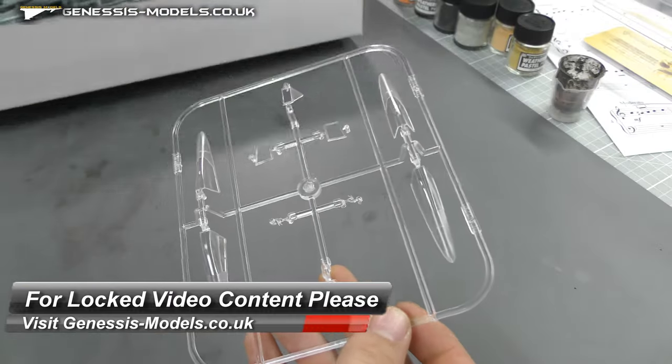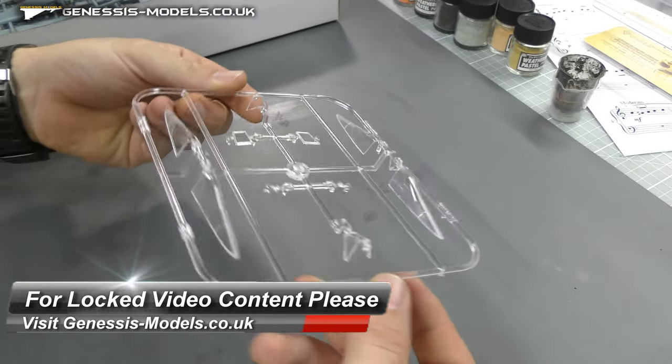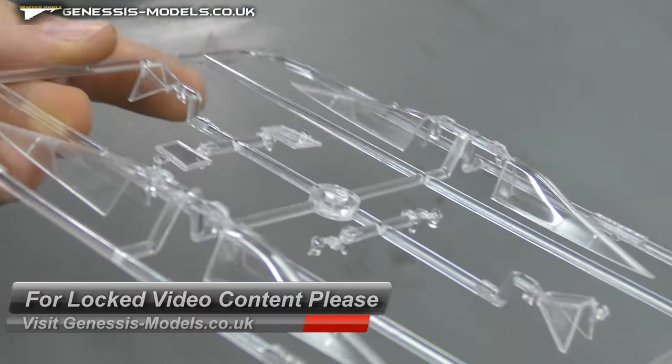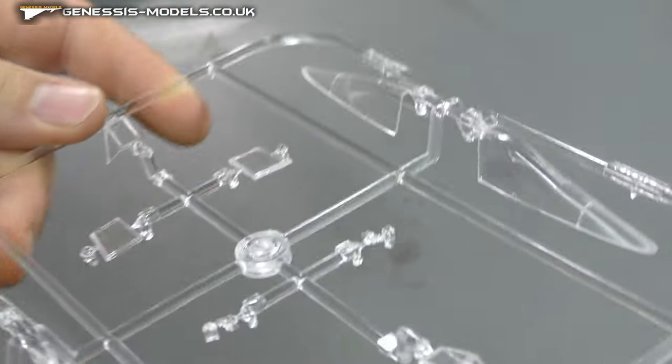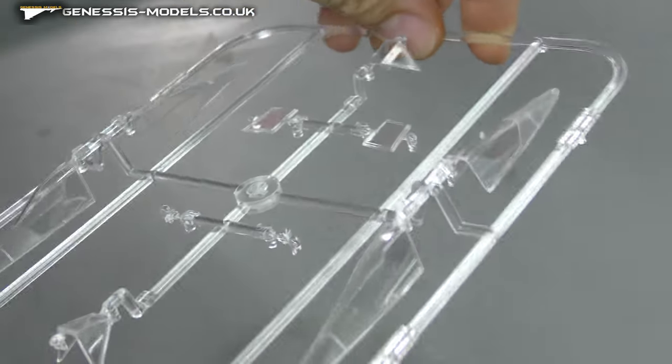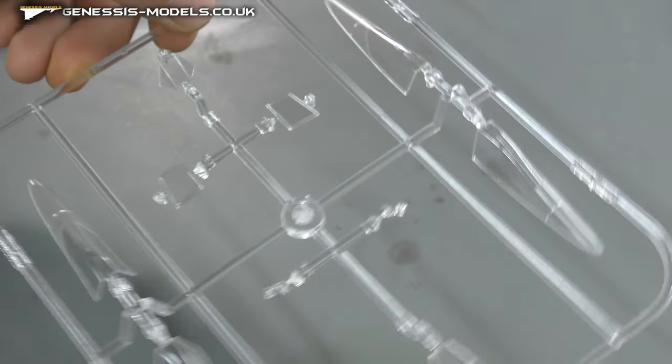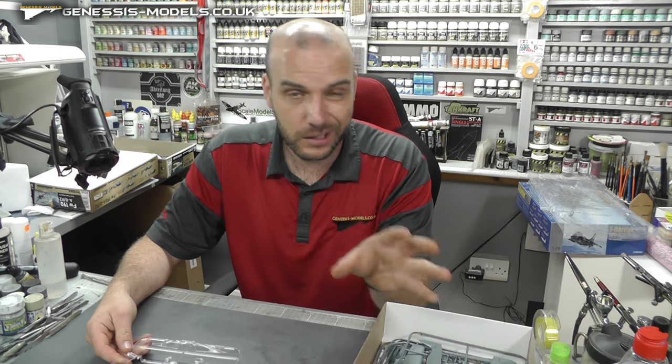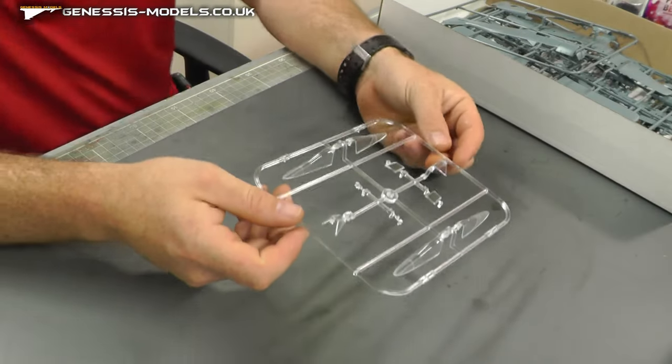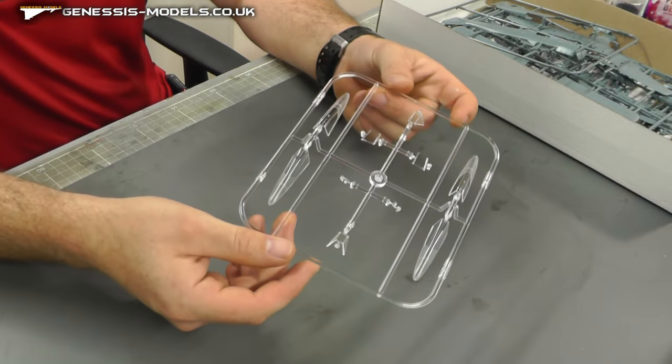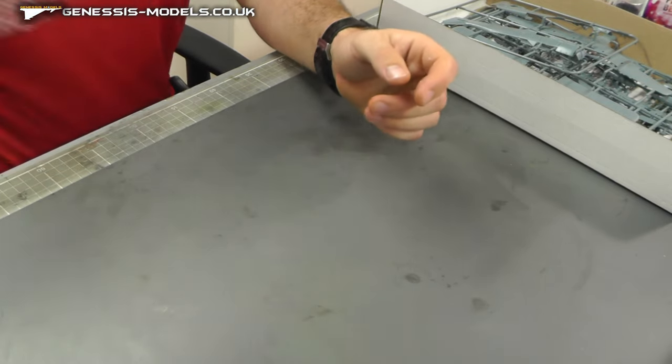Let's take a look at our first sprue. We have our canopy bits here, which should be no problems because it is Eduard. They look quite nice and shiny. We do have a lot of canopies here, so lots of different variants, and lots of re-boxes, so you can do loads and loads of Focke-Wulfs if you want to.